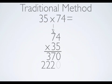The final step for the traditional method is to add my 370 plus my 2,220. When I do that, 0 plus 0 is 0, 7 plus 2 is 9, 3 plus 2 is 5, and 2 plus 0 is 2. The answer to 35 times 74 is 2,590.